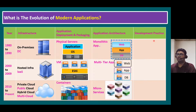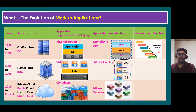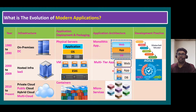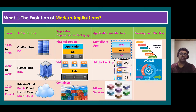When it comes to development practice, in the earlier era the model was called the waterfall model. In that model, provisioning an application from initial setup to production release would normally take weeks to months. In the second era of hosted infrastructure and multi-tier application architecture, this model was revised to the agile development practice, which reduced release time from weeks-to-months down to days-to-weeks.